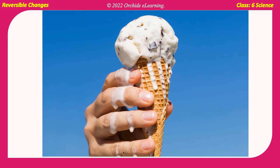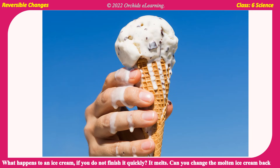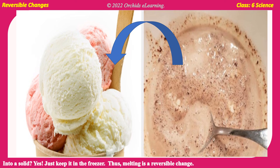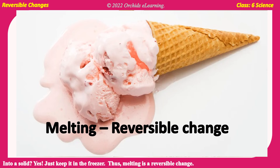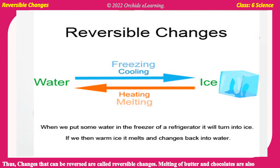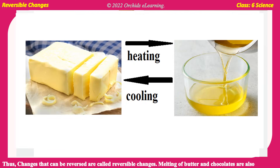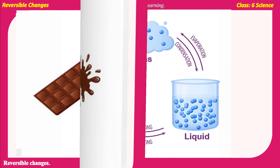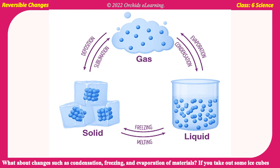Reversible changes: What happens to ice cream if you do not finish it quickly? It melts. Can you change the molten ice cream back into a solid? Yes — just keep it in the freezer. Thus, melting is a reversible change. Changes that can be reversed are called reversible changes. Melting of butter and chocolates are also reversible changes. Changes such as condensation, freezing, and evaporation of materials are also reversible.